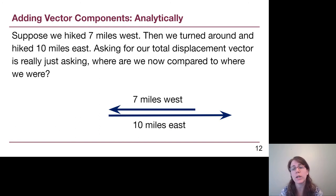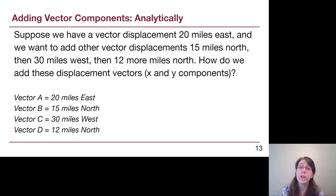And if we draw a picture or if we think about west and east as having different signs, plus and minus signs, we can recognize fairly quickly that we are now three miles east of our starting point. That would be our total displacement vector. Let's say that we had our car, we did all these hikes and now we want to know where are we compared to our car, we are three miles east.